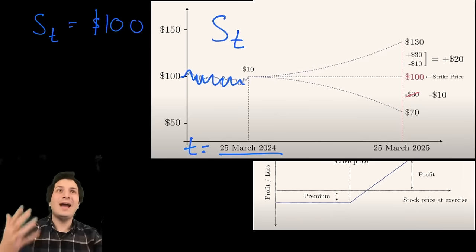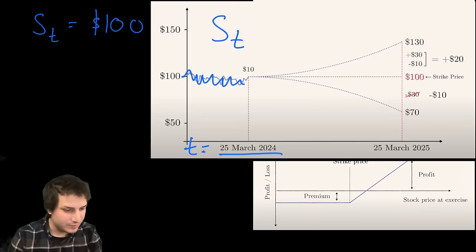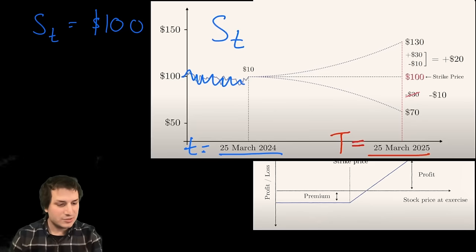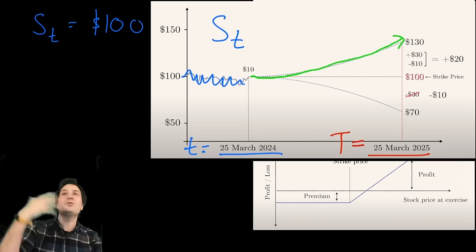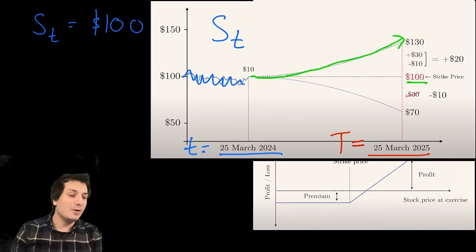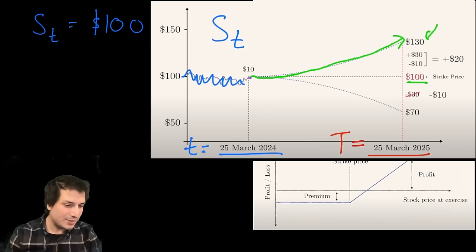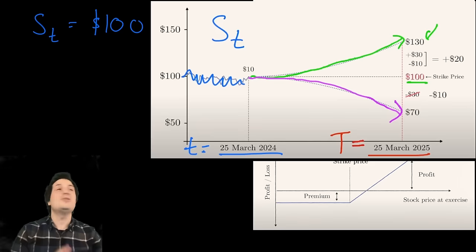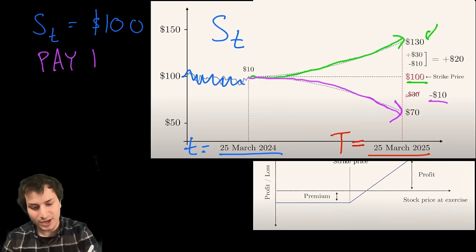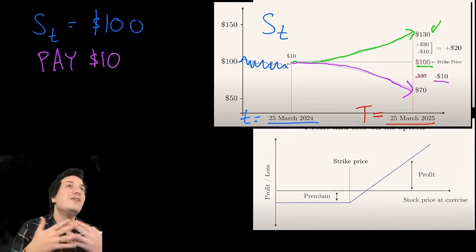You buy the option to purchase the stock for $100, not on March 25th, 2024, but at a later time — capital T, the 25th of March, 2025. If the stock price goes up to $130 and you have the option to buy for $100, you can make $30 profit: buy for $100, sell on the open market for $130. On the other hand, if the stock price goes down to $70, you won't make profit, but you only lose your initial $10 premium, because you can choose not to exercise the option.